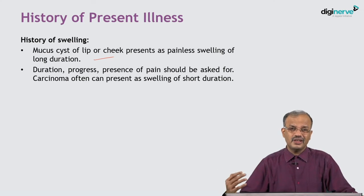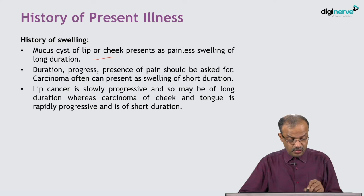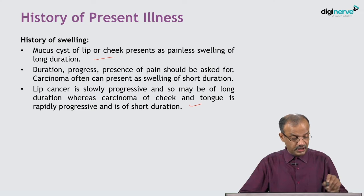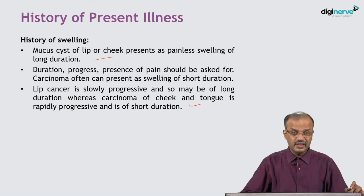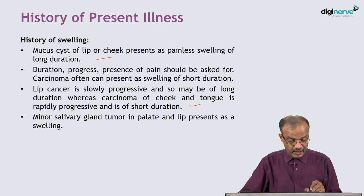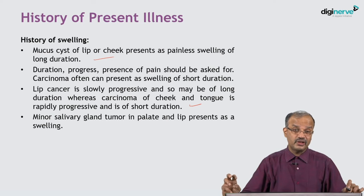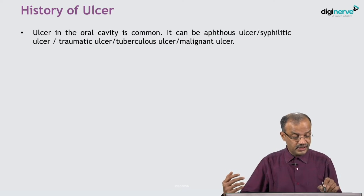In these situations, swelling is the presentation. Otherwise, by and large, ulcer is a more common presentation in oral malignancies and oral diseases. Lip cancer is slowly progressive and may be of long duration, whereas carcinoma of the cheek and tongue is rapidly progressive and of short duration. Minor salivary gland tumour in the palate and lip presents as a swelling, not an ulcer. Ulcer is a very important and common presentation — many oral issues present as ulcer.